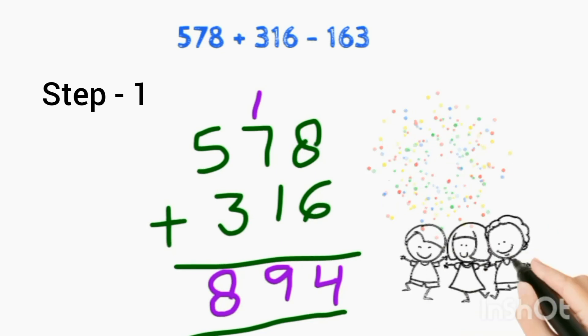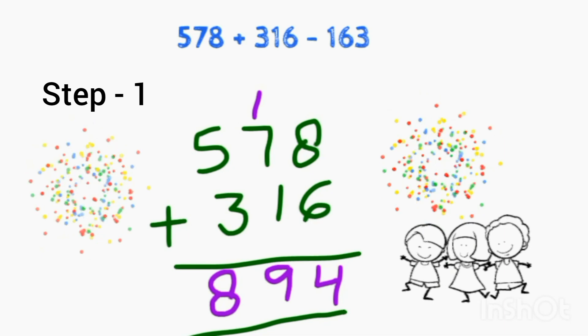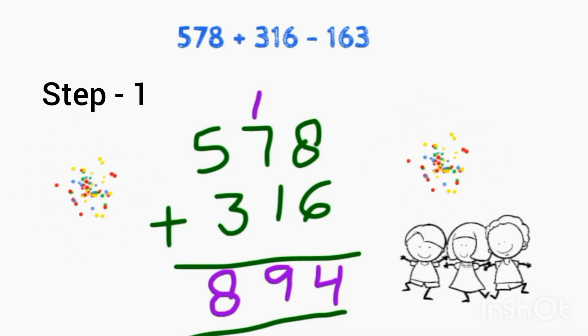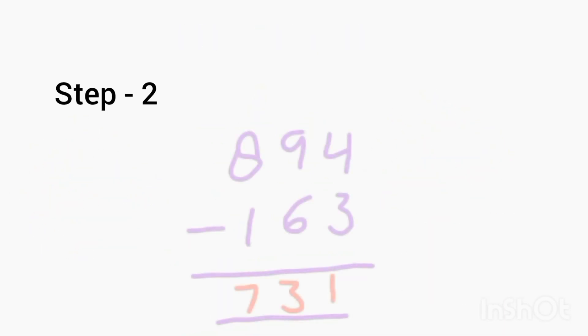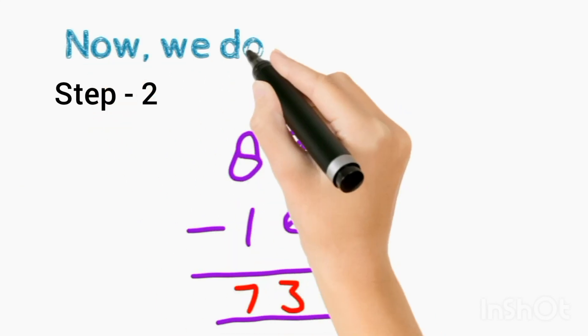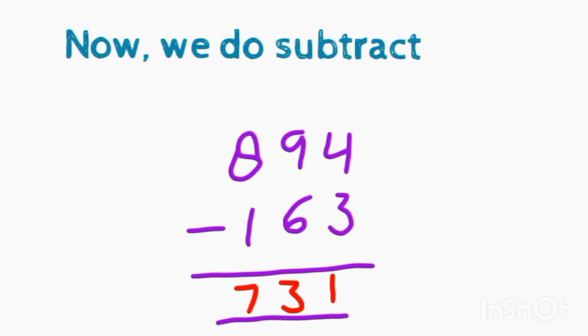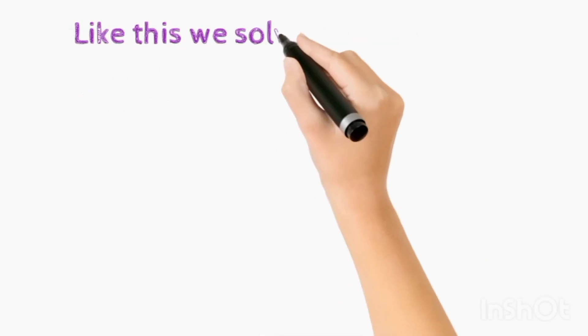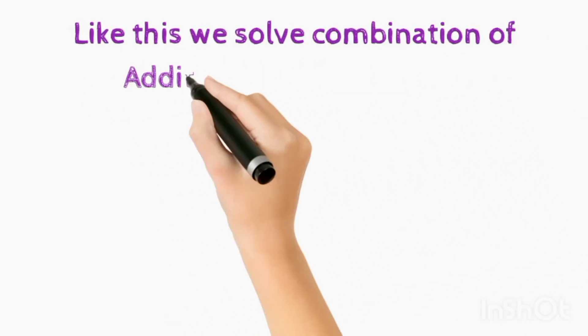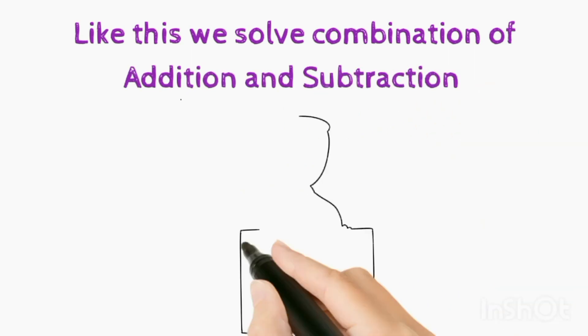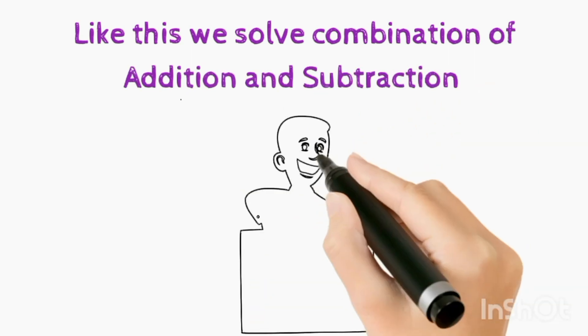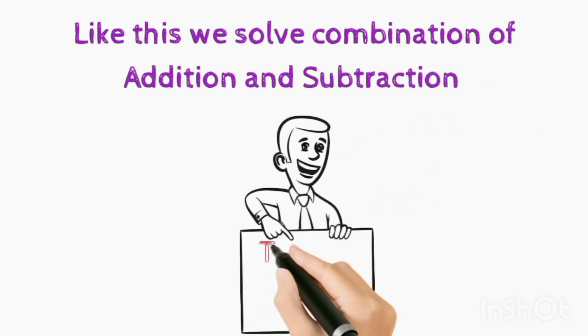Now step 2, we do minus: 894 minus 163 is 731. Like this we solve combination of addition and subtraction. Thank you.